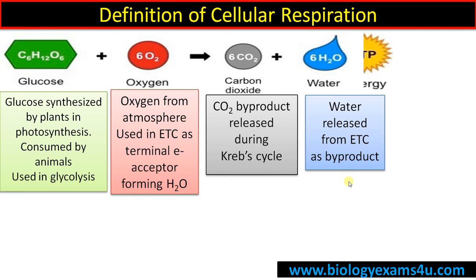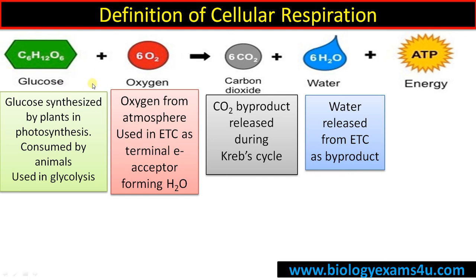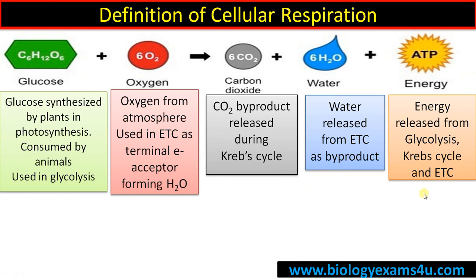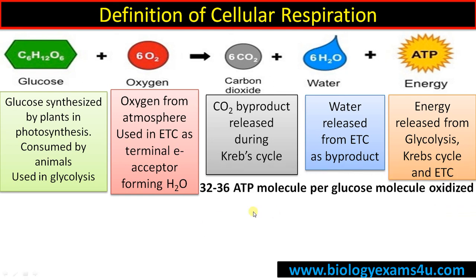Finally, ATP — the energy that is released by the breakdown of the substrate glucose. This energy is released from glycolysis, Krebs cycle, and electron transport chain. From glycolysis, 2 ATP is synthesized, whereas in Krebs cycle, along with ATP, there is NADH and FADH2 as reducing powers. When that enters the electron transport chain, the majority of ATP is synthesized — close to 30 ATP. So approximately 32 to 36 ATP molecules are synthesized per glucose molecule oxidized.